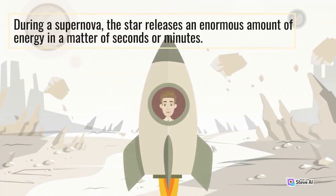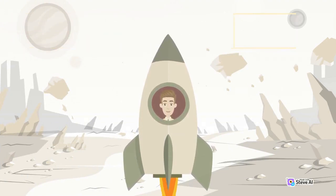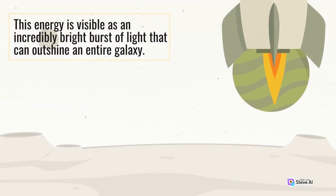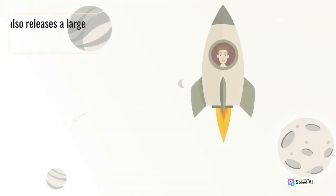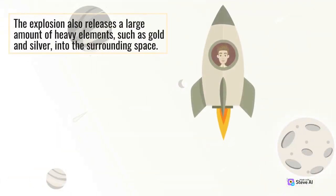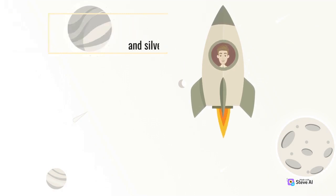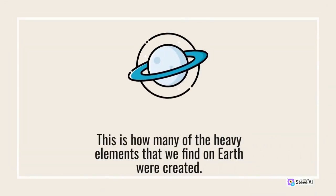During a supernova, the star releases an enormous amount of energy in a matter of seconds or minutes. This energy is visible as an incredibly bright burst of light that can outshine an entire galaxy. The explosion also releases a large amount of heavy elements, such as gold and silver, into the surrounding space. This is how many of the heavy elements that we find on Earth were created.